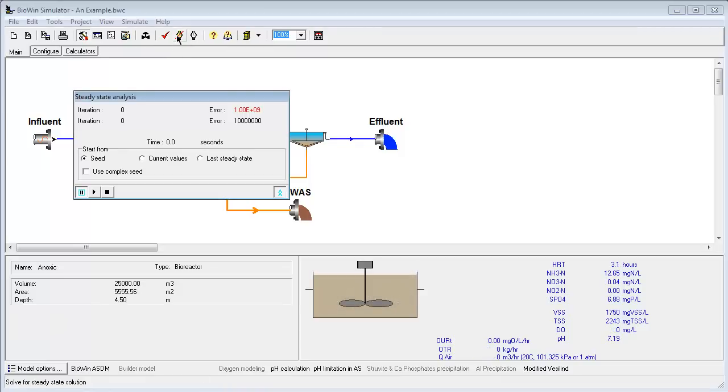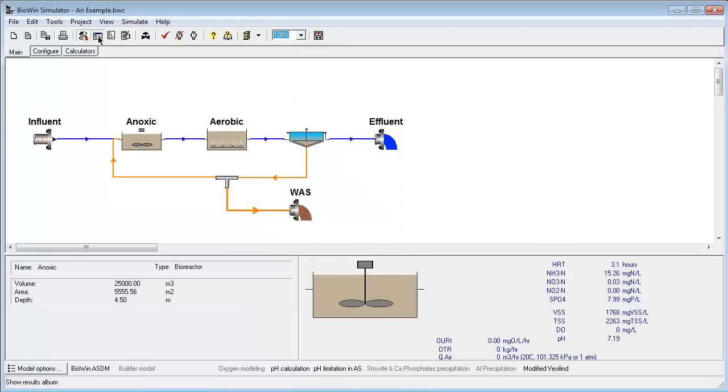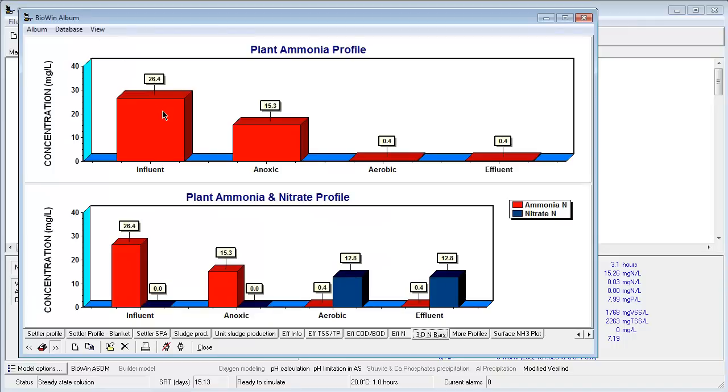We can run steady state simulations which will predict how the plant is going to respond under long-term average conditions. When BioWin has found a steady state solution, we can look at how the plant is performing for various process parameters that are of interest to us.